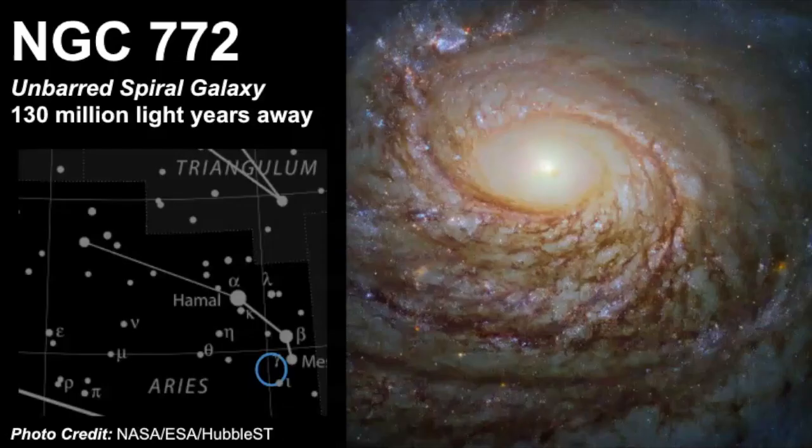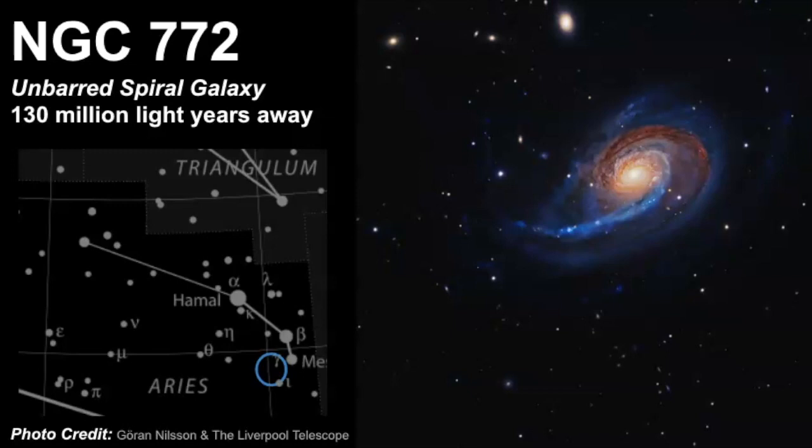NGC 772 is an unbarred spiral galaxy and what a gorgeous picture this is. I just love it. I never get tired of these pictures. This galaxy is estimated to be 130 million light years away. It's about 200,000 light years in diameter which makes it twice the size of the Milky Way galaxy. If we were to take a look at a different picture of it, you can see it's a really amazing spiral galaxy and there's no bar in it. You can still see the arms coming out and there's a little bit of unevenness in terms of the shape of the arms and the brightness as well but this is something that you would need some heavy magnification to see and some super dark skies to even point them out.